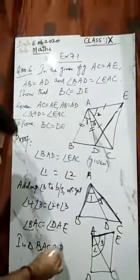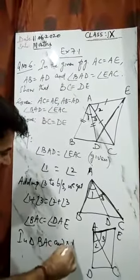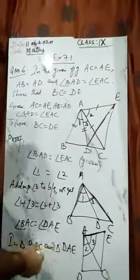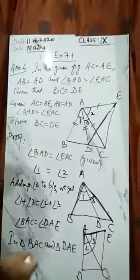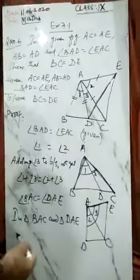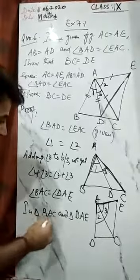Now we'll take triangles. In triangle BAC and triangle DAE, we will prove these two are congruent. For congruency we need to show three parts are equal, and those three parts come in CPCT.